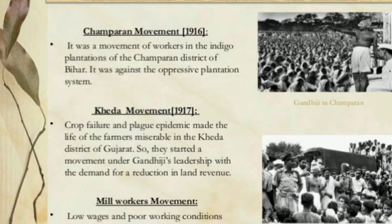The mill workers movement in 1918 in Gujarat: the cotton mill workers had a strike for higher wages. Gandhiji went there and supported the workers.